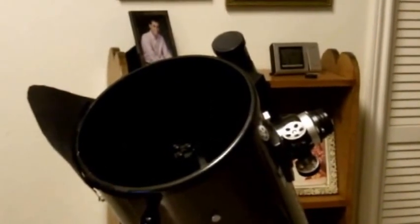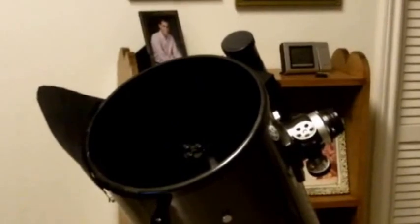So let's take a look first at the secondary, and I want to show you something on the secondary mirror. Here we are looking at the secondary, and as you can see I've got what's called Bob's knobs installed on the secondary mirror of this Orion XT-10.